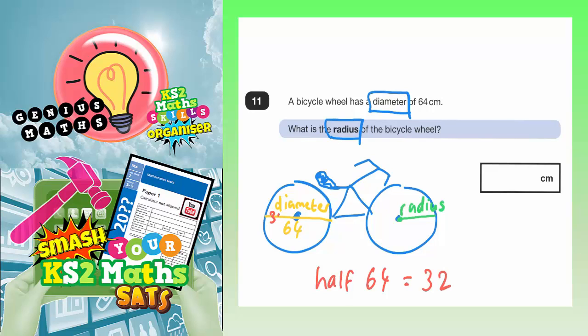So you'd have 32 in this half and 32 in this half. And both of those halves are both radiuses of the wheel. So the radius of the wheel is 32 centimeters.